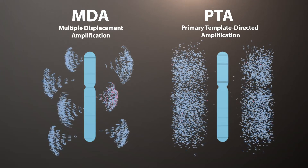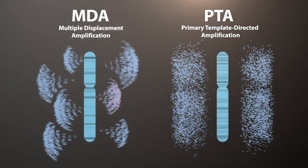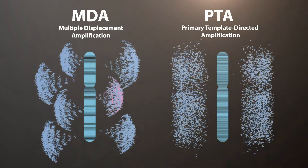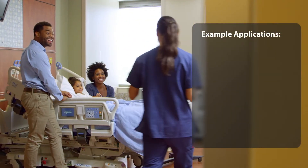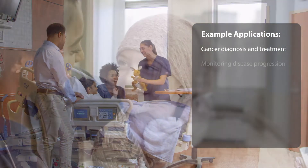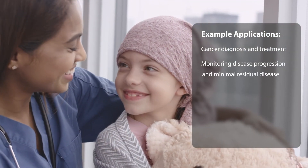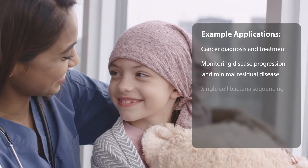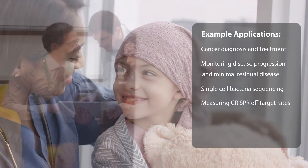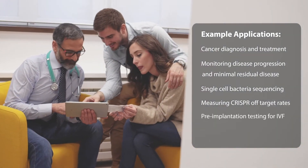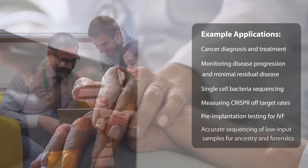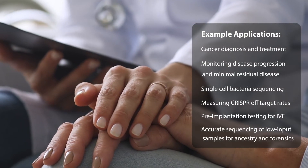With this increase in coverage uniformity, researchers observed far less allelic imbalance compared to MDA. Some examples of applications of PTA include cancer diagnosis and treatment, monitoring disease progression and minimal residual disease, single-cell bacterial sequencing, measuring CRISPR off-target rates, pre-implantation genetic testing for in vitro fertilization, and accurate sequencing of low-input samples for ancestry and forensics.